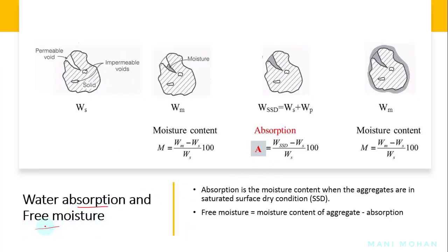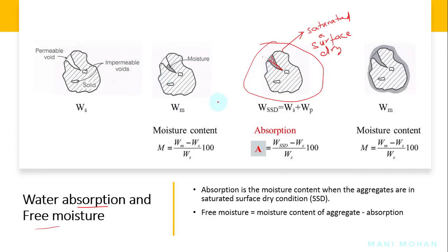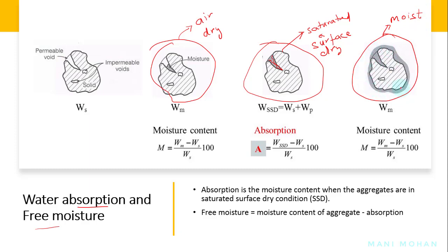Water absorption and free moisture: aggregates have pores and can absorb water. When all the pores of aggregates are full of water, it is said to be saturated and surface dry. If the aggregate is allowed to dry in air, some of the water from the pores will evaporate — this is called air dry. Moisture in excess of the saturated surface dry condition will make a moist condition of the aggregate, where excess water surrounds the surface of the aggregate.